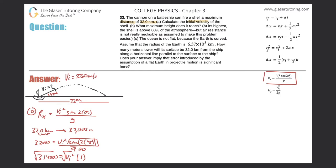So 560 meters per second, which would be equivalent to 0.56 kilometers per second. That's the answer for letter A.